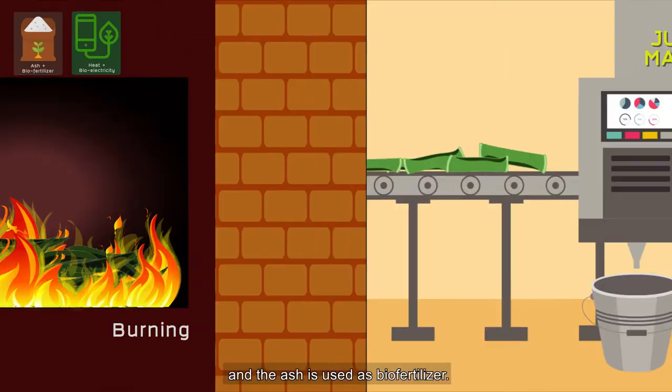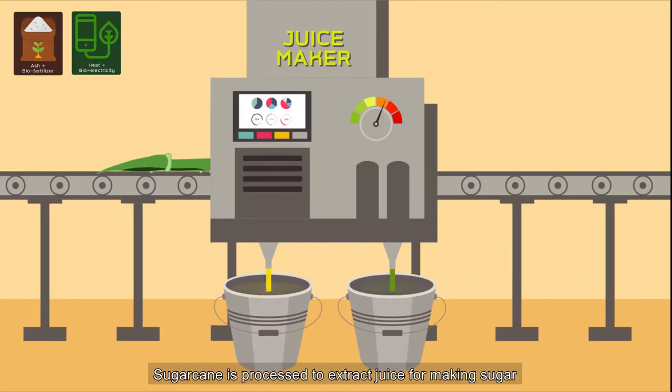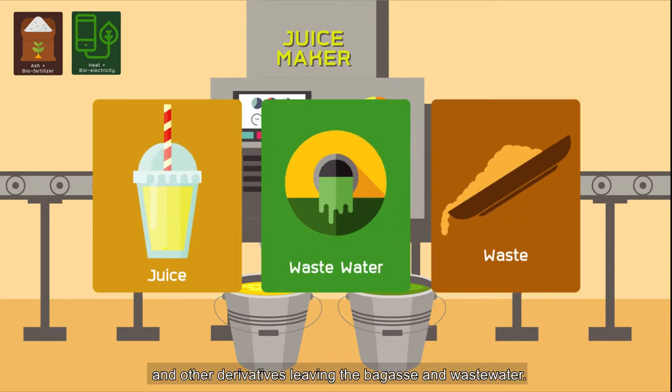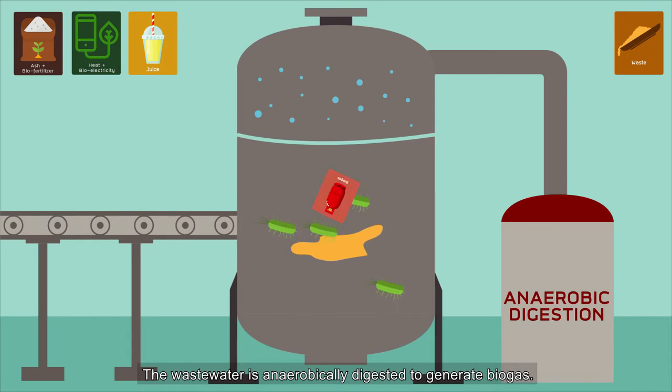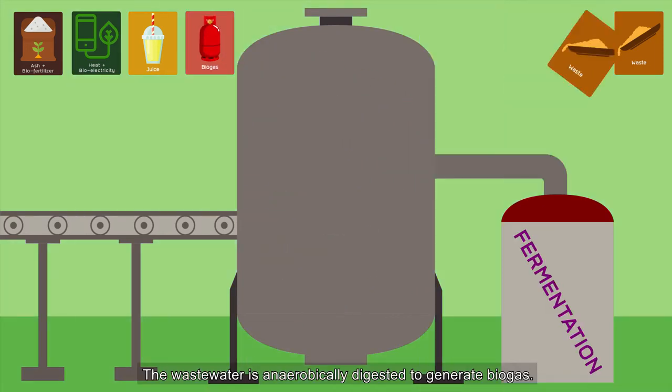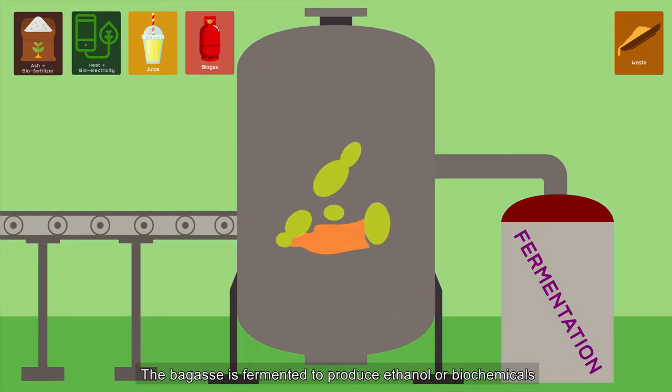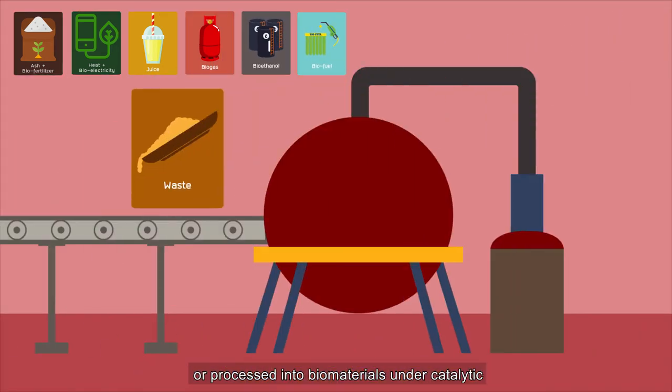used as biofertilizer. Sugarcane is processed to extract juice for making sugar and other derivatives, leaving the bagasse and wastewater. The wastewater is anaerobically digested to generate biogas. The biogas is fermented to produce ethanol or biochemicals, or processed